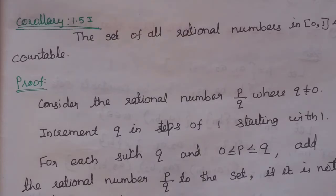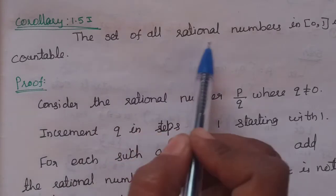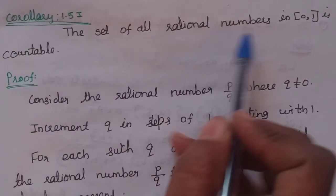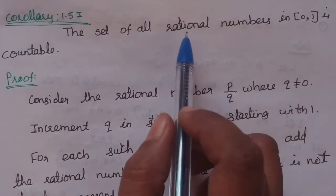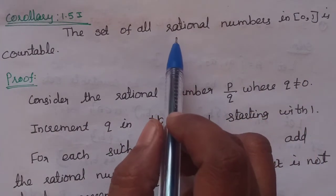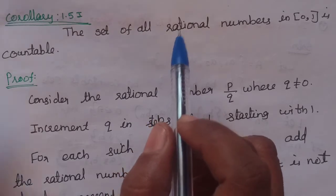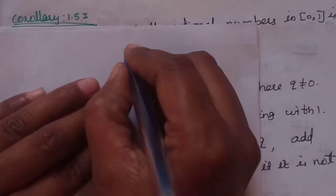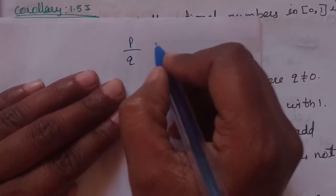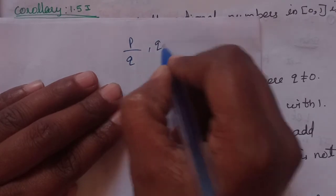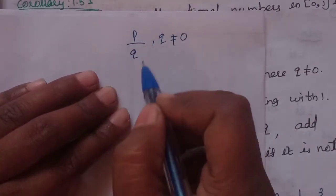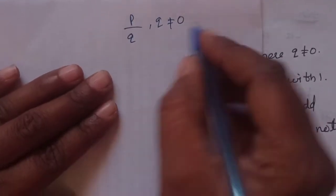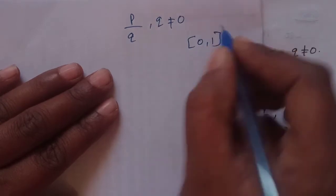Let's look at the real analysis countable result. The set of all rational numbers in the closed interval 0,1 is countable. Let's prove the set of rational numbers in the closed interval 0,1 is countable. We consider rational numbers in general in P by Q format, where the denominator Q is not equal to 0, and the fraction value lies between 0 and 1.